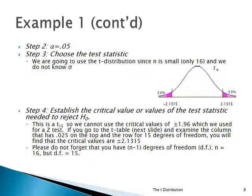Step two: alpha is 0.05. This is a two-tail test, so you take the alpha and cut it in half. You have 0.025, that's 2.5% on the right tail, and 0.025, 2.5% on the left tail. You can't use Z here. You have a sample size of 16, and as mentioned, you lose one degree of freedom — you have to work with T15.